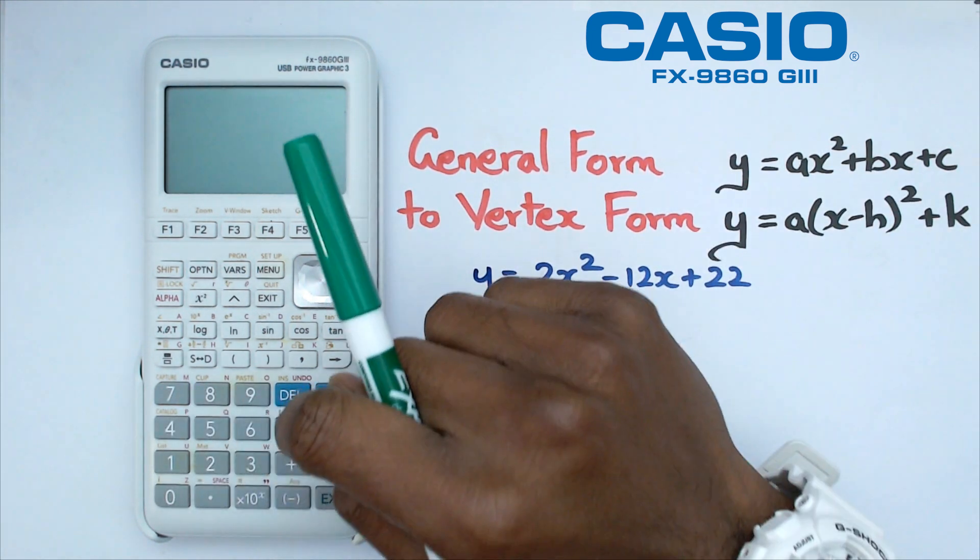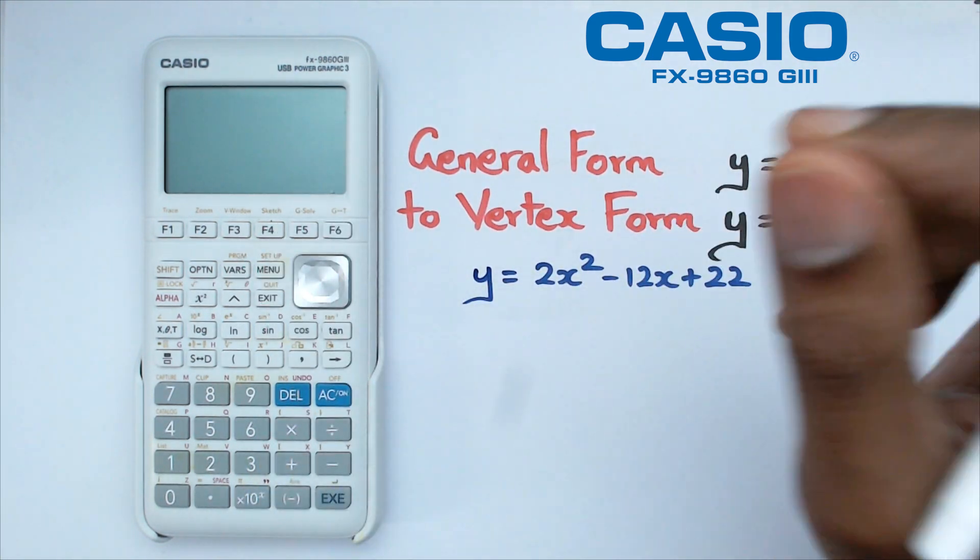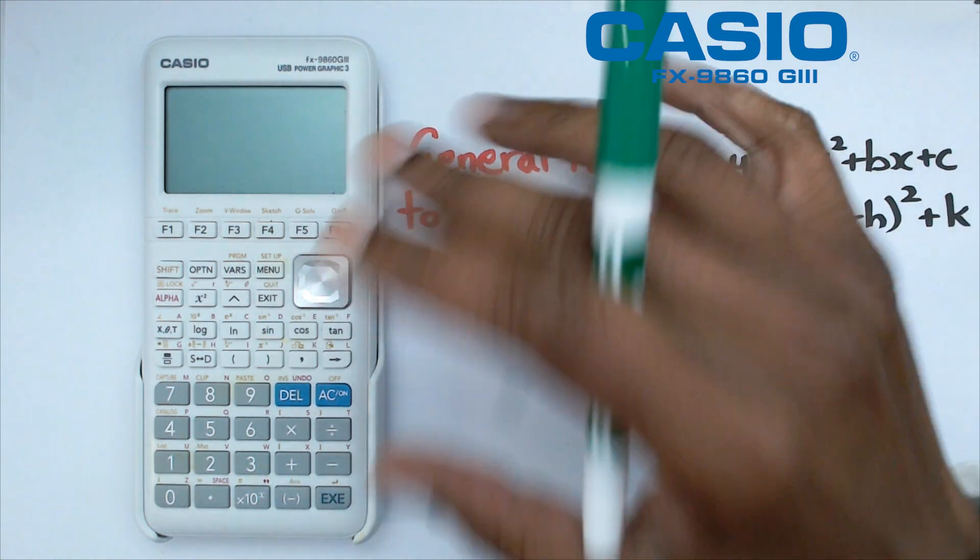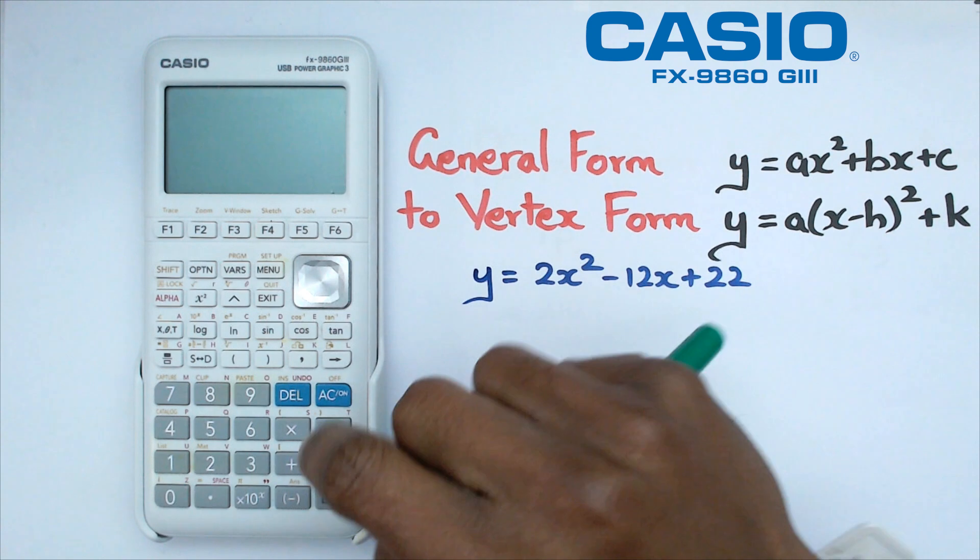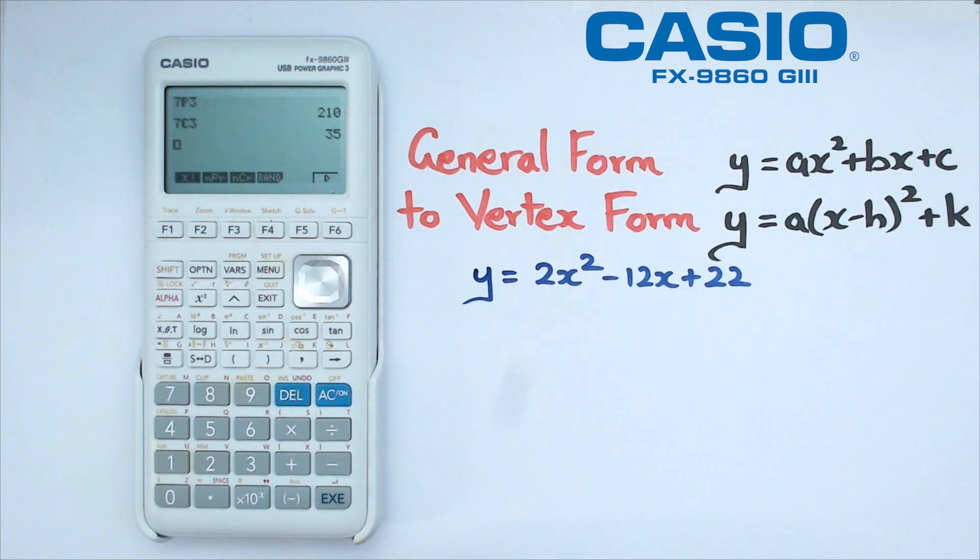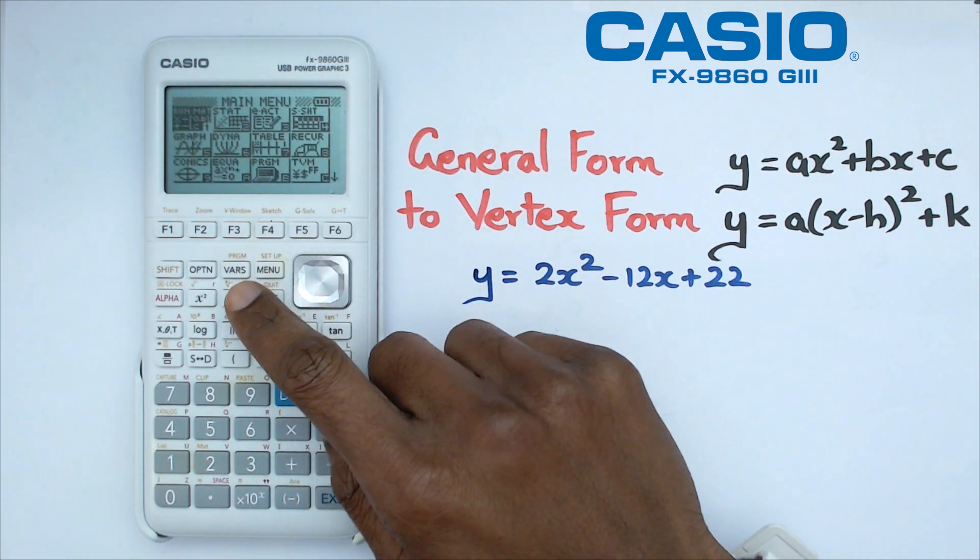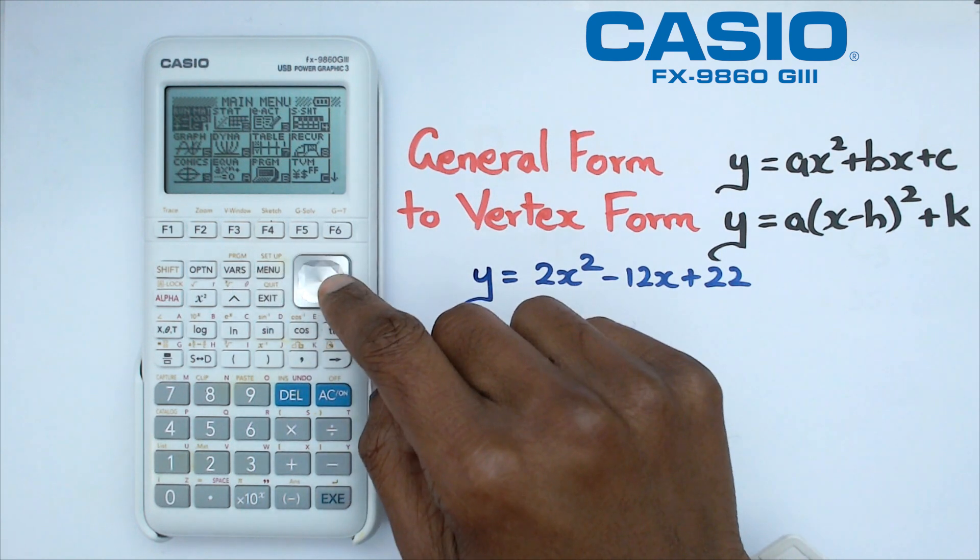The other option is to actually put this in the graphics calculator and there's a couple of little hacks that you can do where you could actually come up with vertex form fairly quickly. So what we're going to do is we're going to switch on the calculator, go into the main menu.